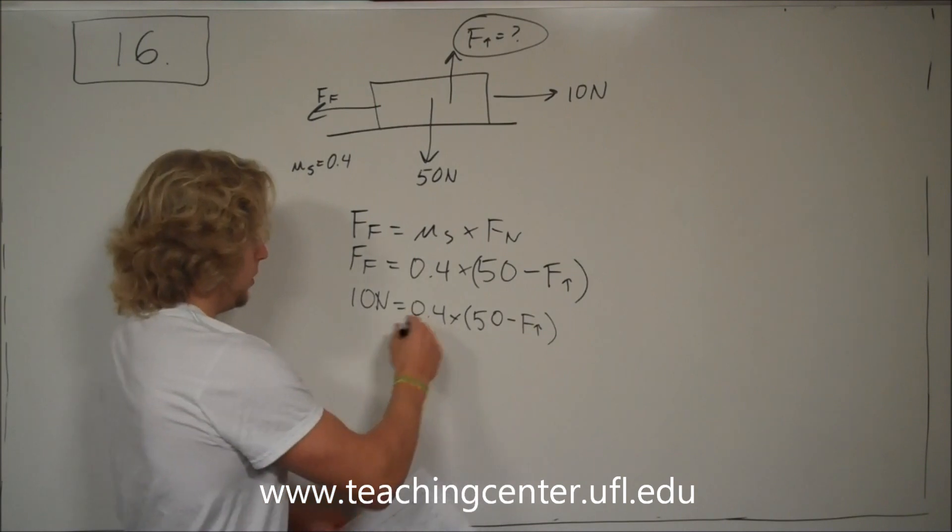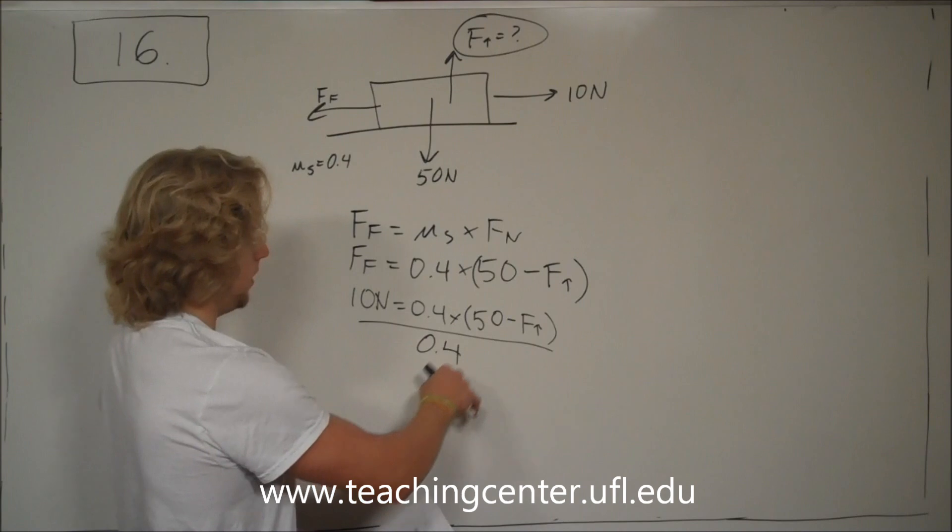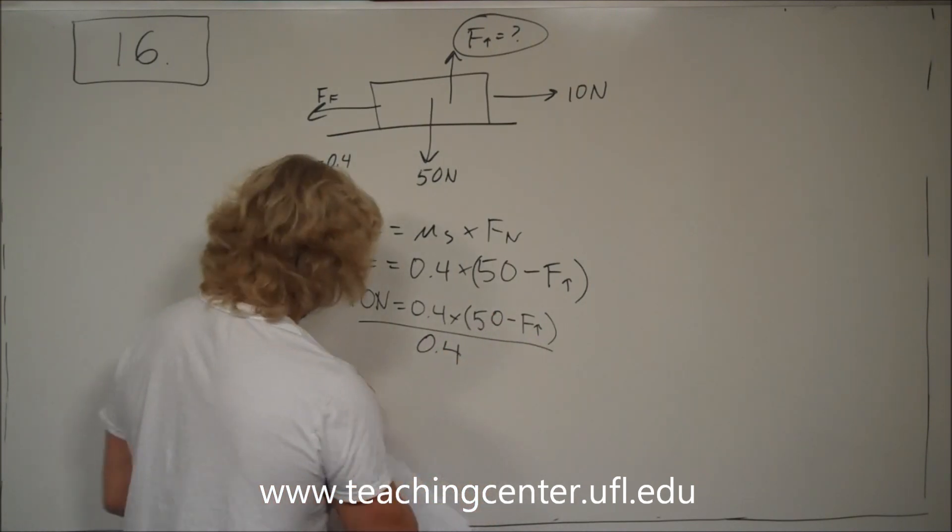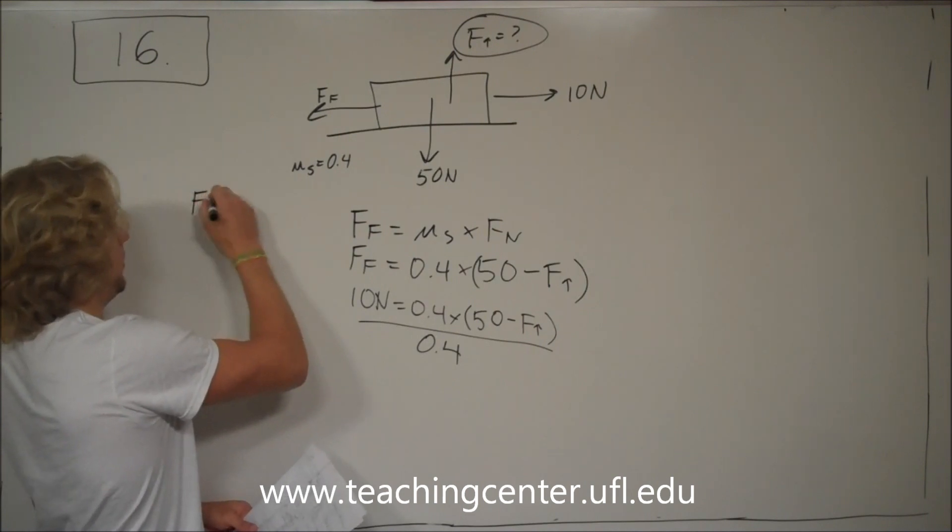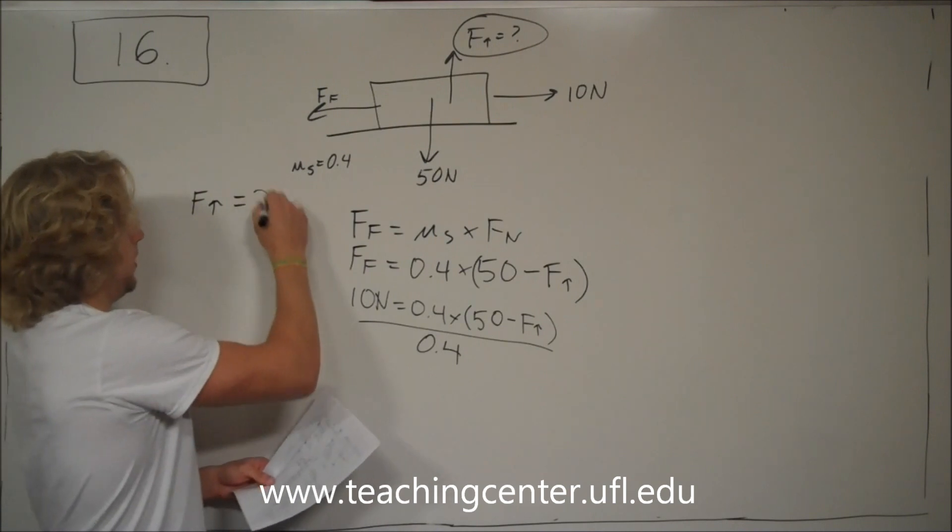From this, we divide everything by 0.4, and then we solve for f up. And it turns out that f up is going to be equal to 25 newtons.